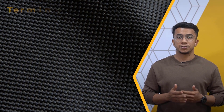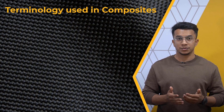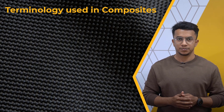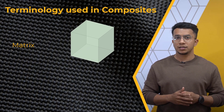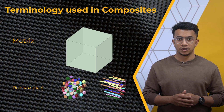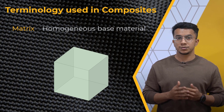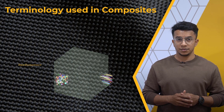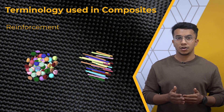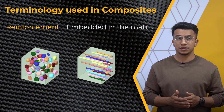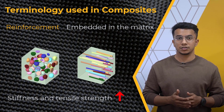Let's first look at some of the terminology that is commonly used in the study of composite materials. The matrix and the reinforcements are the primary components of a composite. A matrix is a homogeneous base material that can make up the majority of the composite material layer. Reinforcements are constituents of a composite material that are embedded in the matrix, increasing the stiffness and tensile strength of the composite.